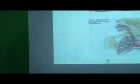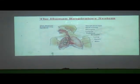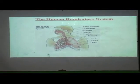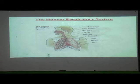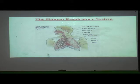We were discussing the human respiratory system — how it works. Here is a picture of the human respiratory system showing the nostrils, nasal passage, trachea, bronchi, and the lungs surrounded by the ribs.